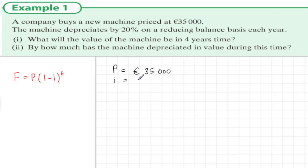Let's write down the information we have. The present value P is €35,000. The interest rate is 20%, therefore 1 minus i equals 0.8. The time in question is 4 years, so t equals 4.